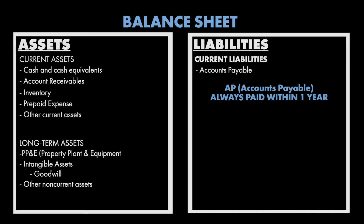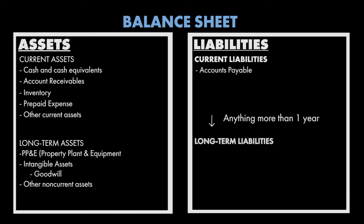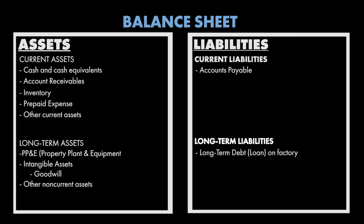Anything that you don't plan on paying back within one year is a long-term liability. However, that loan you have on your manufacturing factory is actually going to have a portion that will be paid back within one year. There's actually an account that allows you to specify that — it's called current portion of long-term loans.